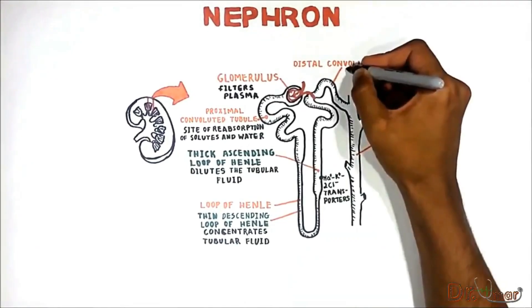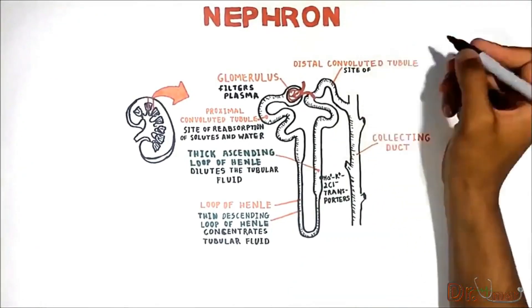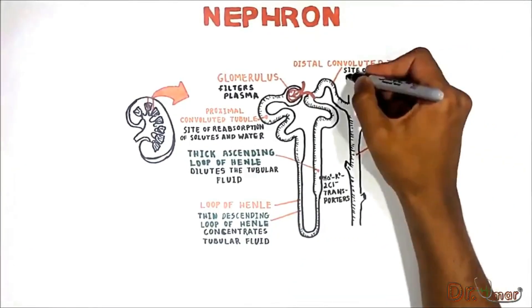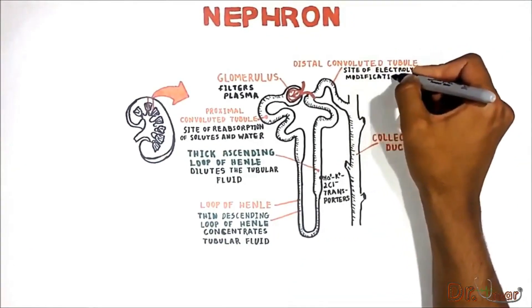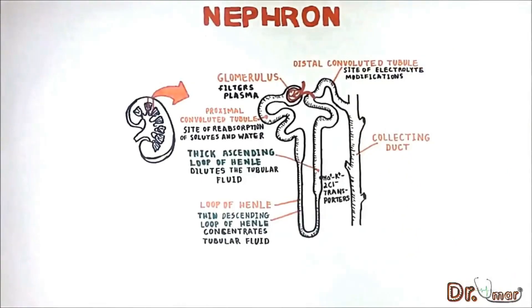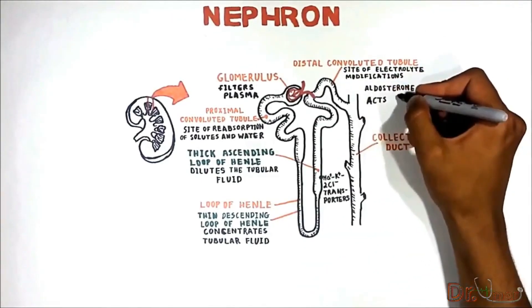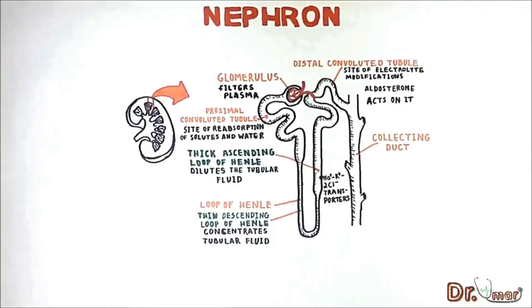The distal convoluted tubule is the site of electrolyte modifications and also the site where aldosterone acts, especially on late distal segments.